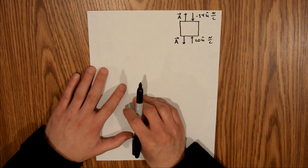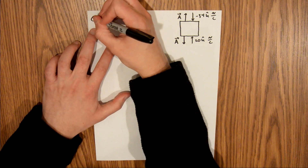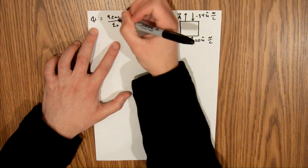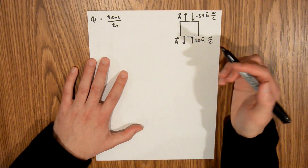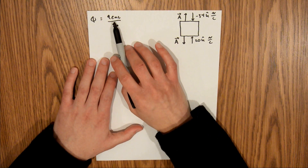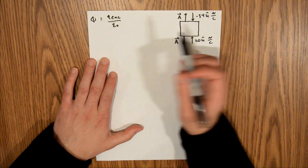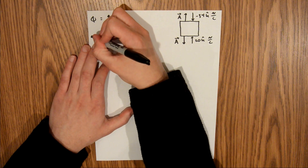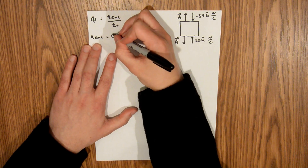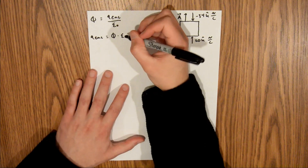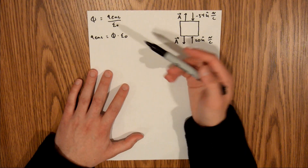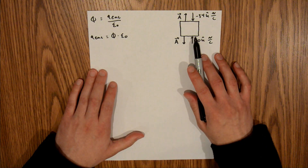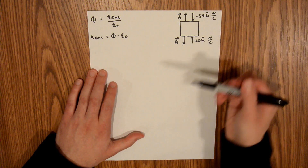That is the setup for this problem. We know that flux is equal to the charge enclosed over epsilon naught, where epsilon naught is our vacuum permittivity constant. In this problem we are looking for the charge contained within the cube, which is Q enclosed, so we can multiply both sides by epsilon naught to isolate our charge enclosed. That's equal to flux times epsilon naught. Now we know epsilon naught — that's a universal constant — but we need to find our flux, and that is our total flux into the cube, which is the addition of our flux from the top and our flux from the bottom.